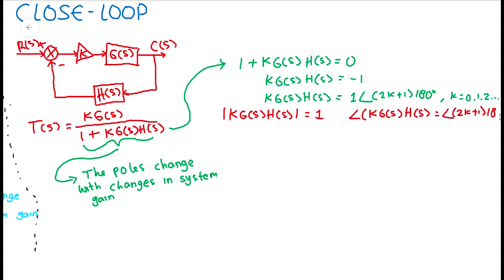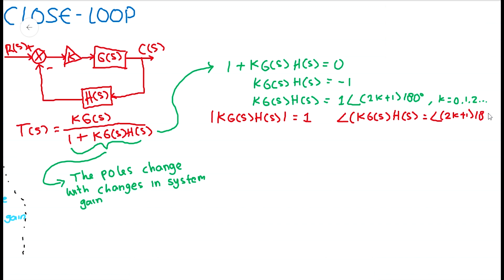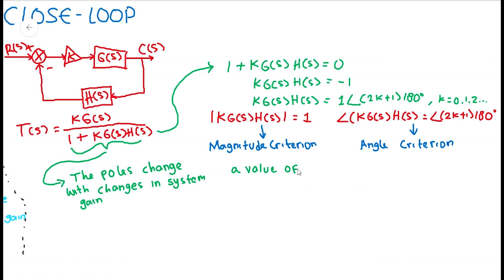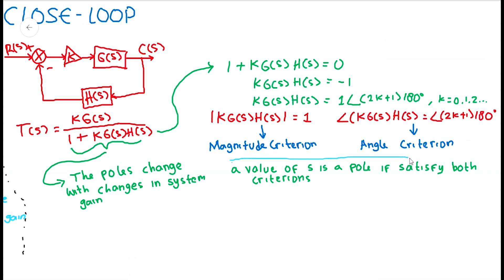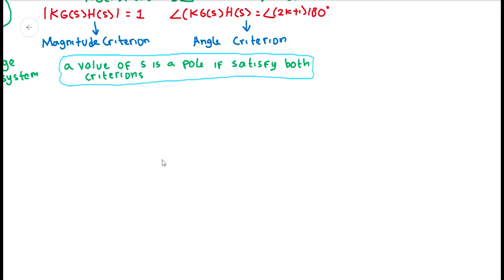K times G times H equals minus 1, which equals 1 at an angle of (2K+1) times 180 degrees, where K equals 0, plus or minus 1, plus or minus 2, etc. Alternatively, S is a closed-loop pole if it satisfies: the magnitude of K times G(S) times H equals 1, and the angle of K times G(S) times H is an odd multiple of 180 degrees. These two criteria are critical — the first is called the magnitude criterion, and the second is called the angle criterion, the two main criteria when determining the properties of a root locus.